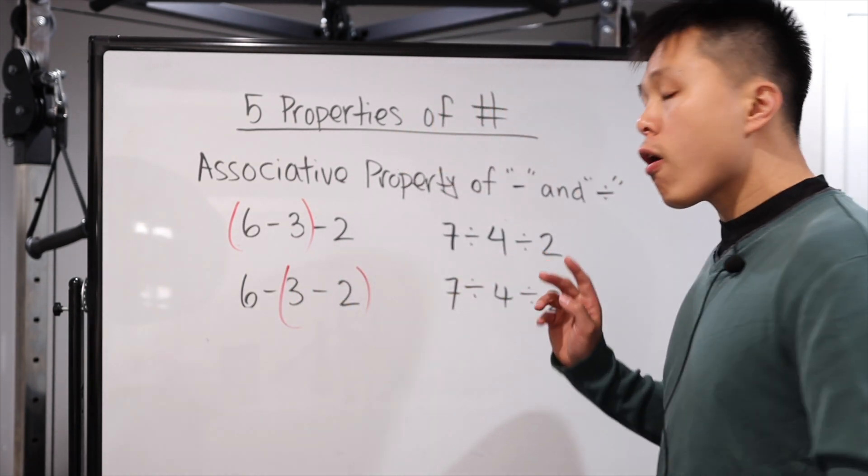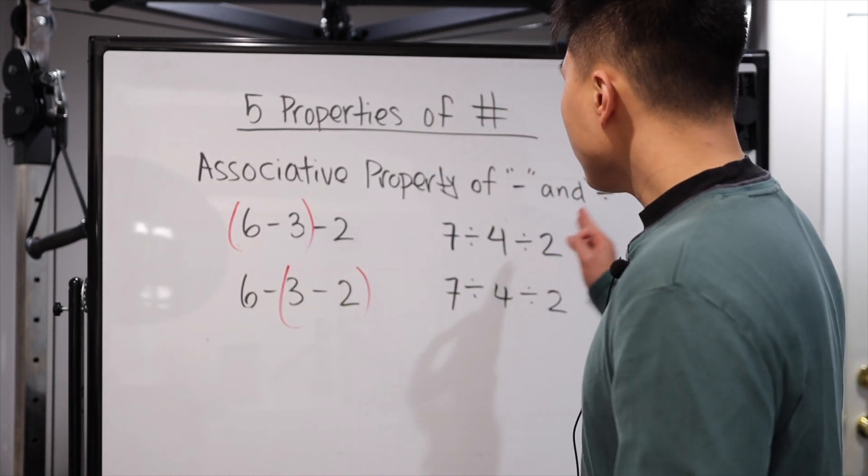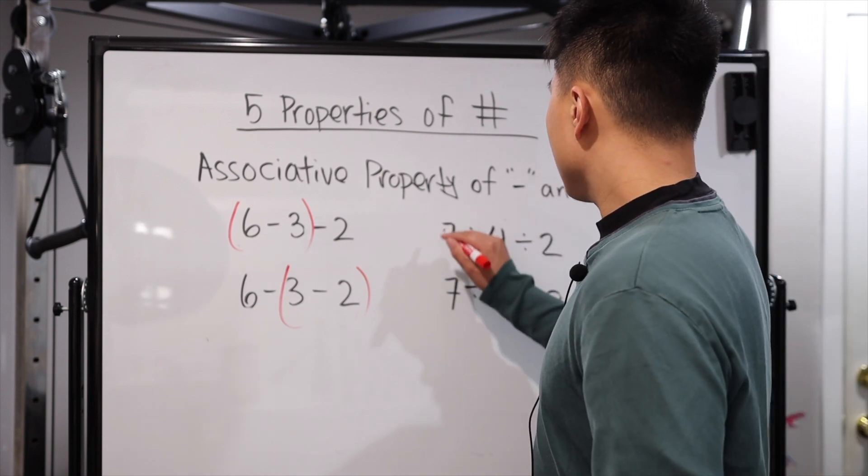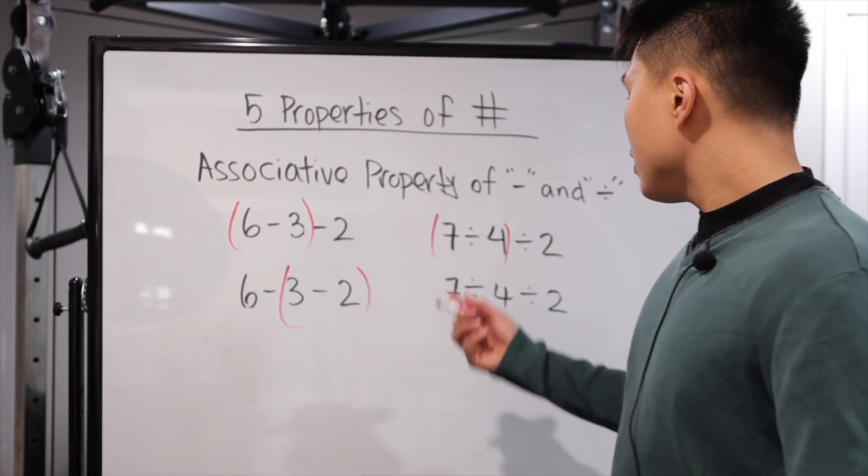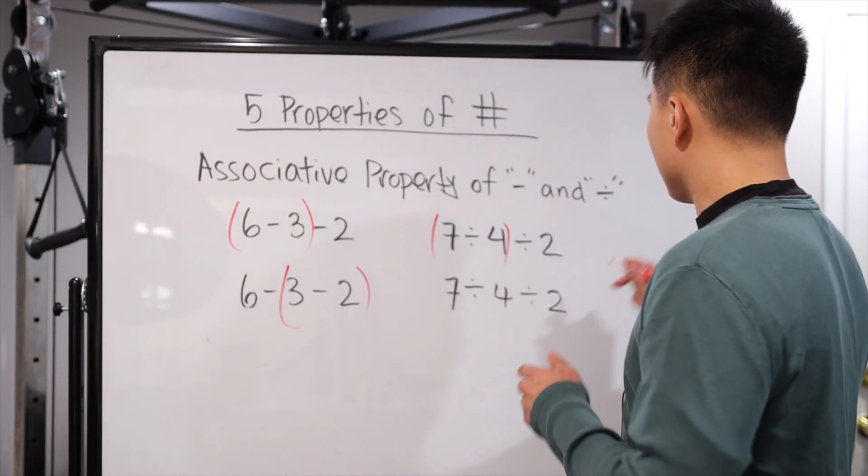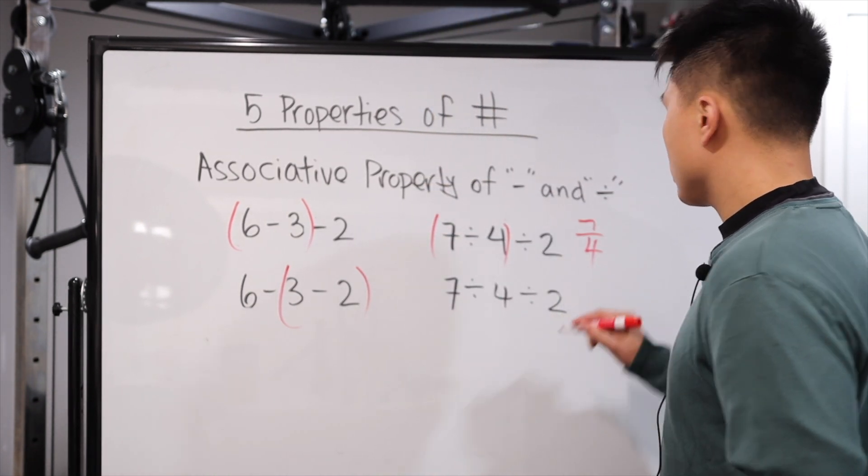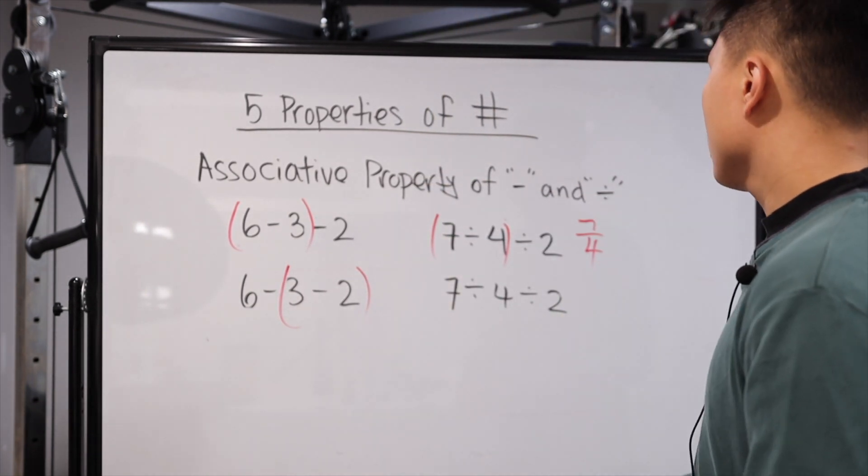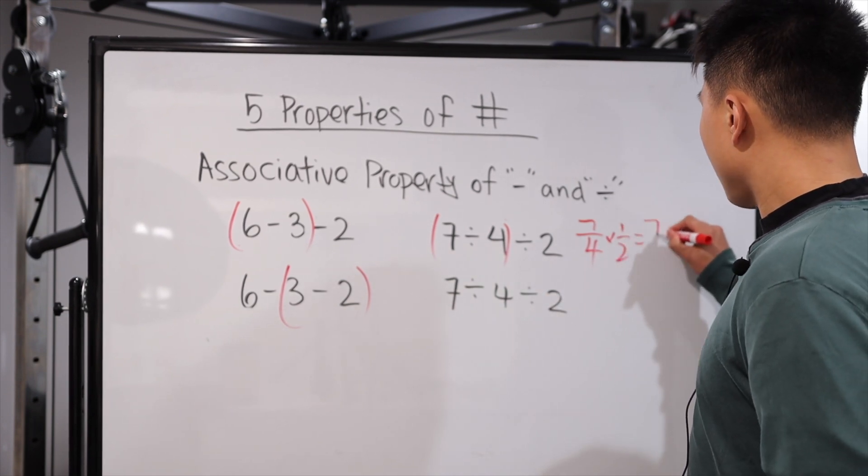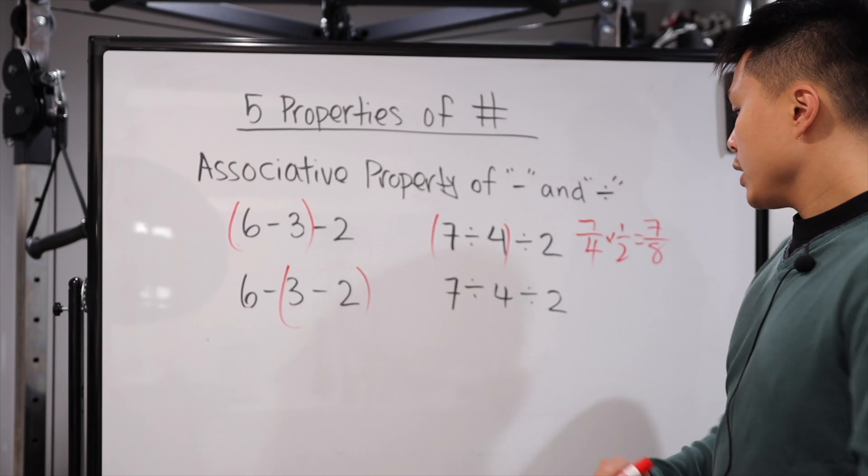Notice that the two answers are very different. The same thing is going to happen when you start dividing and you group it differently. So for example, here, seven divided by four, well, it's going to be a decimal. Don't really want to show the decimal. We'll just keep it as a fraction seven divided by four because it looks nicer. Seven divided by four, then divided by two, basically times one half, it's going to be seven over eight.